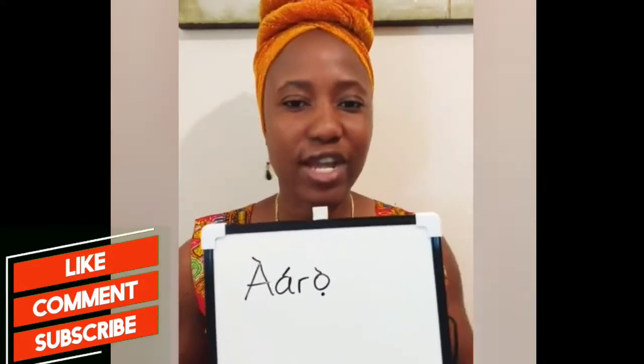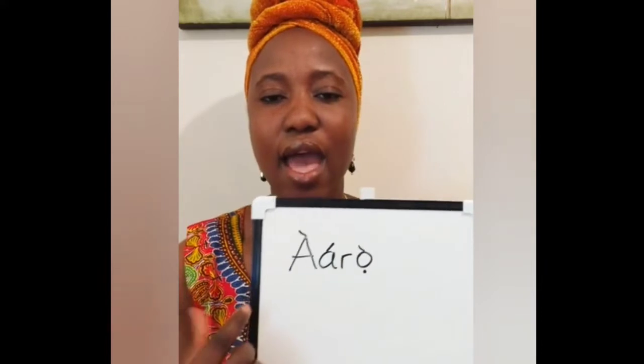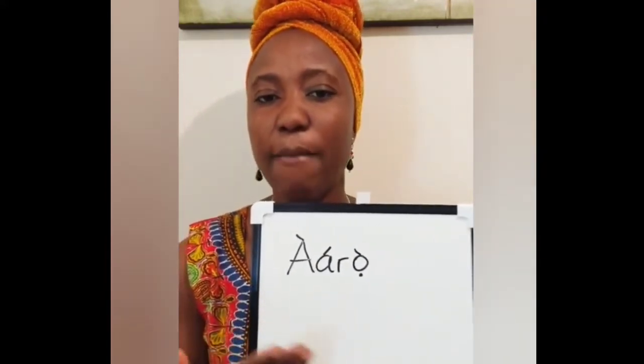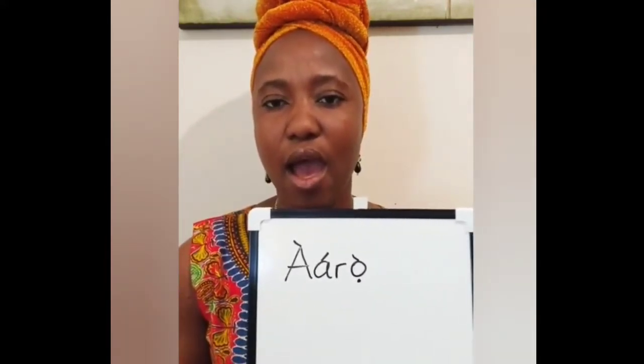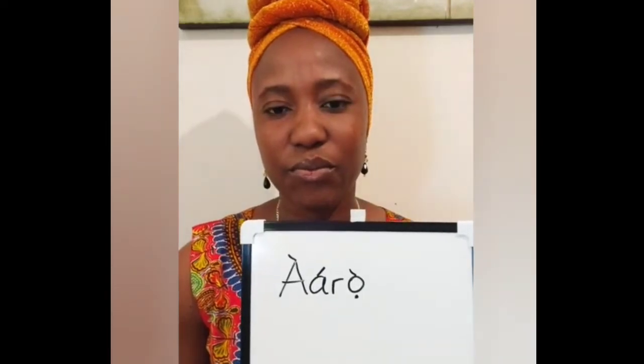Repeat after me so you can practice how to say it: ARO. It has the tone mark — ARO. The next time of the day we'll be looking at is OSAN — O-S-A-N. This is how you write OSAN.